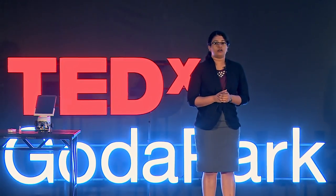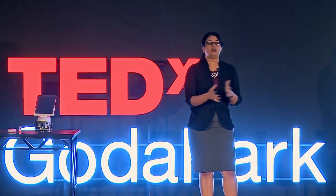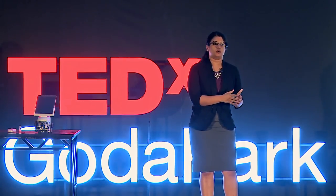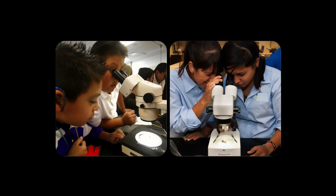It usually involved the teacher setting up the sample on one microscope and students standing in line to just see it. The first few students in the line may have seen the sample, but everyone else just struggled to see anything of significance and usually ended up assuming that the round blob — which was probably a dust particle — was the pollen grain they were supposed to see.